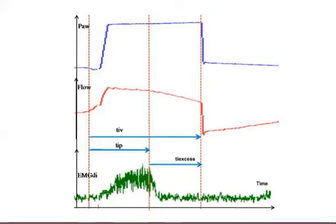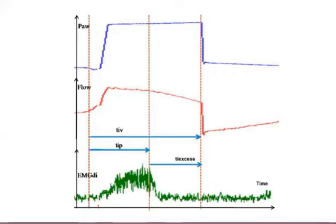A very useful monitoring approach — if it could be non-invasively and easily applied — involves displaying airway pressure, instantaneous flow, and the electromyographic signal of the diaphragm as a function of time. This picture would clearly show the end of the neural inspiratory time as indicated by the diaphragmatic EMG, allowing us to determine if pressurization ends when neural inspiratory time ends, which is not always the case, leading to prolonged cycling or prolonged pressurization. We can quantify this as the excess pressurization time by the ventilator.